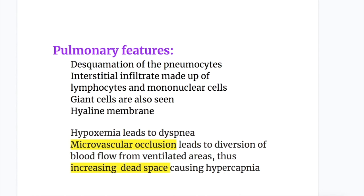The pulmonary features of a cytokine storm include: desquamation of the pneumocytes, interstitial infiltrate made up of lymphocytes and mononuclear cells, giant cells, and hyaline membrane. Hypoxemia leads to dyspnea. Microvascular occlusion leads to diversion of blood flow from ventilated areas, and increasing dead space causes hypercapnia.